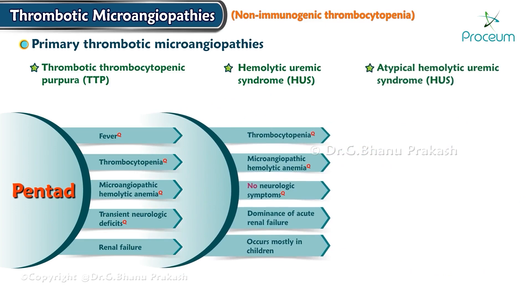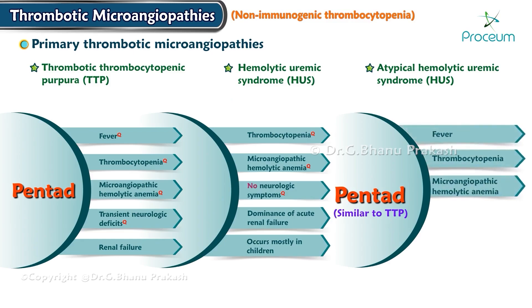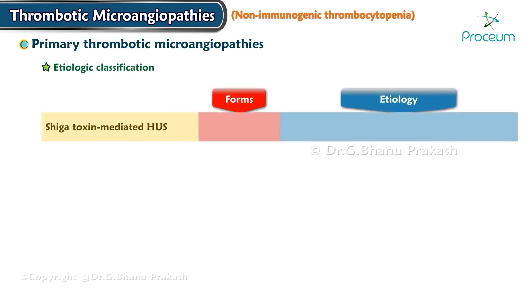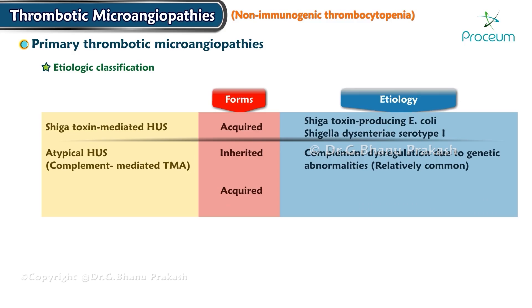Atypical HUS is recognized from a pentad similar to TTP, wherein patients present with fever, thrombocytopenia, microangiopathic hemolytic anemia, transient neurologic deficits, and acute renal failure. Shiga toxin mediated HUS is an acquired form caused by Shiga toxin-producing E. coli, Shigella, and Dysentery serotype 1. Atypical HUS is complement-mediated and can be inherited or acquired: complement dysregulation due to genetic abnormalities causes the inherited form, while acquired complement dysregulation due to autoantibodies causes the acquired form.